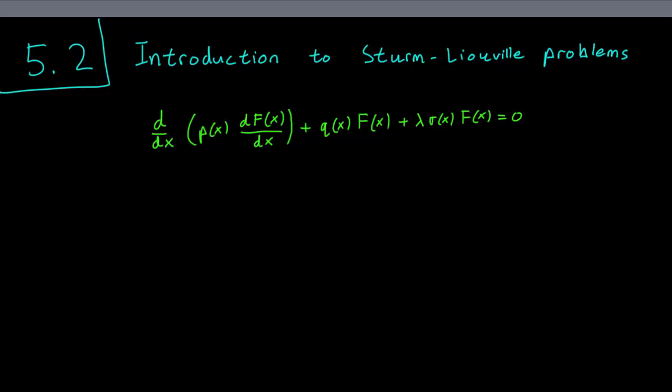So this is how it looks like. You're taking the derivative of p(x) times the derivative of F(x), plus q(x) times F(x), plus lambda—lambda is a constant which has the same meaning as in our previous boundary value problems—times sigma(x) times F(x) equals zero.